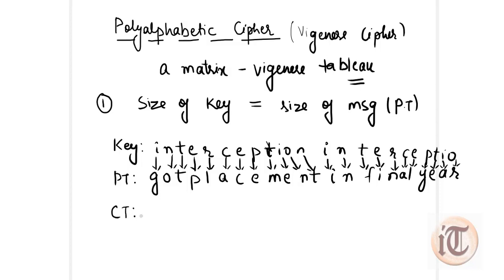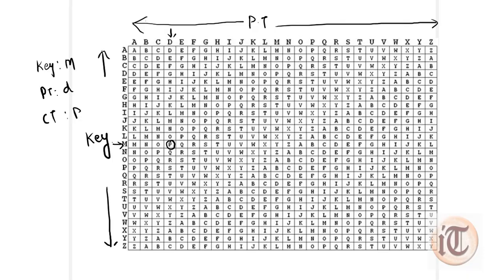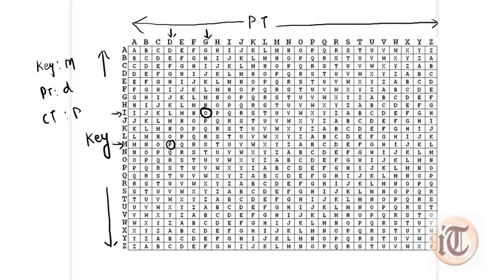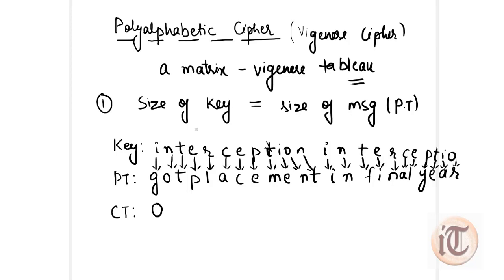Now constructing the cipher text: if the key is I and the plain text is G, we look at the tableau and find their intersection is O. So the cipher text for this pair is O. Similarly, the next key letter is N and the plain text letter is O. Looking up the intersection of row N and column O in the tableau gives us B. So the cipher text for that pair is B.